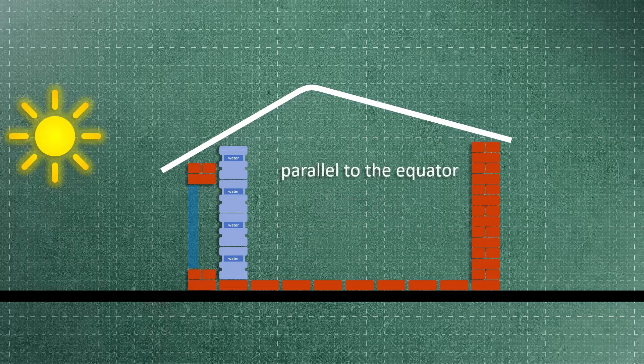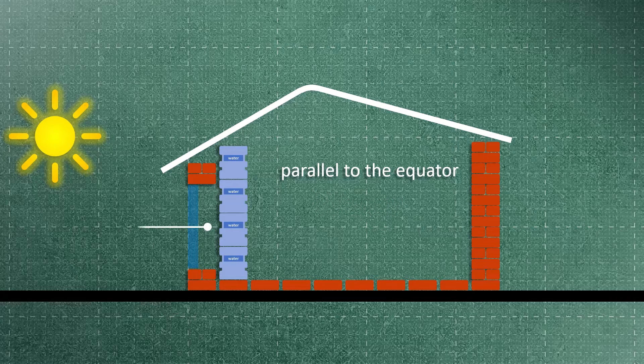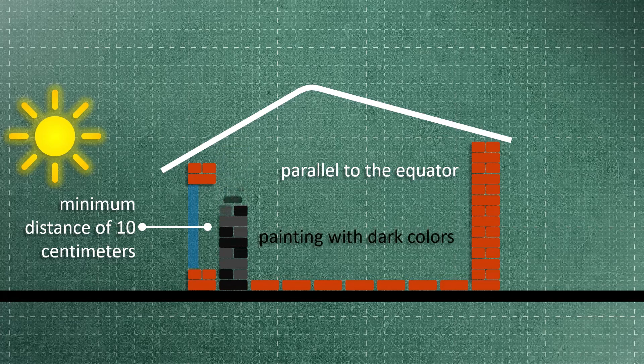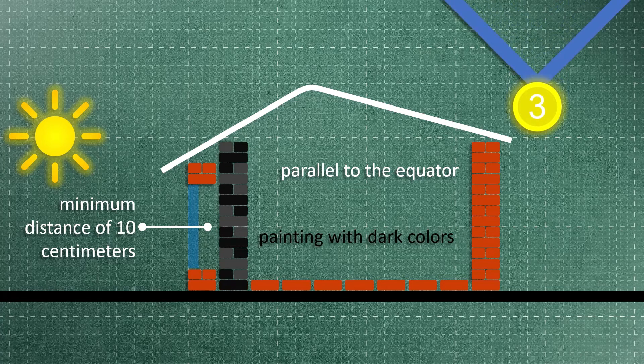Building a wall parallel to the equator, keeping a minimum distance of 10 centimeters between the wall and the glass, and painting the wall with dark colors are three golden rules in designing a Trombe wall.